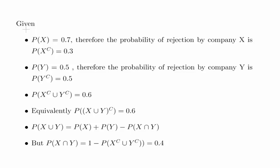The probability of X equals 0.7, therefore the probability of rejection by company X is P(X complement) equals 0.3. And likewise P(Y) is 0.5, which is acceptance, therefore the probability of rejection by company Y is P(Y complement) equals 0.5.